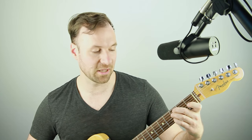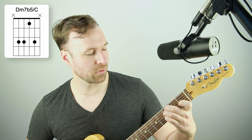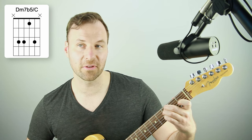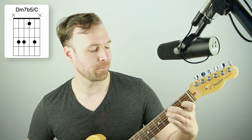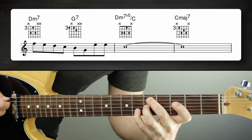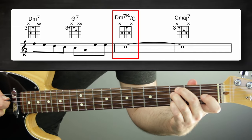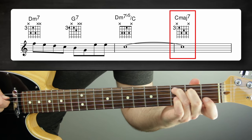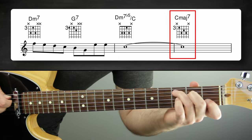My absolute favorite version is the third inversion of half diminished — D half diminished over C. This chord shape is absolutely beautiful. We play that and then resolve to the C major chord. The root stays the same on the bottom.